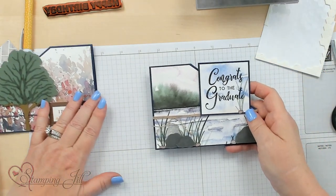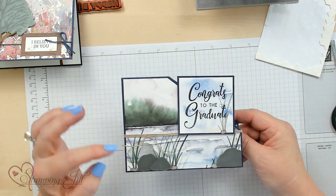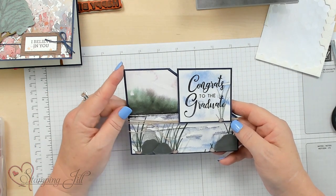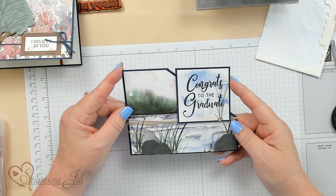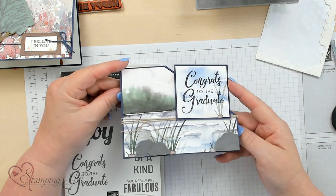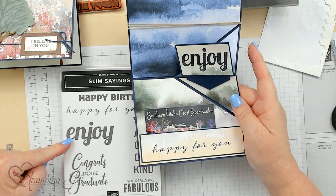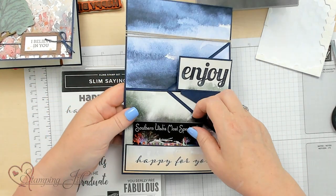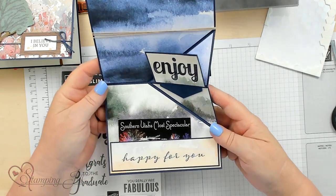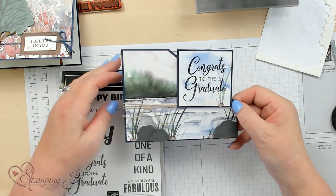This is a graduation card that's super simple with designer series paper. This is done with the New Horizons designer series paper. They come in six by six pieces. I also use the Slim Sayings Congrats to the Graduate, and you open it up. I used Enjoy and Happy For You. This is a little gift card holder right here, just a little pocket for a gift card because graduates, that's what you usually give them is money or gift cards.